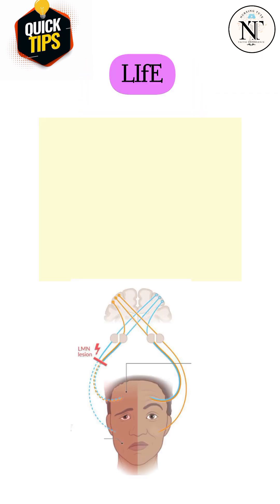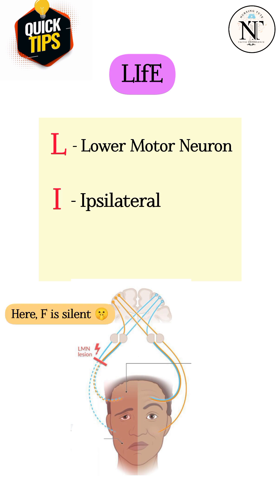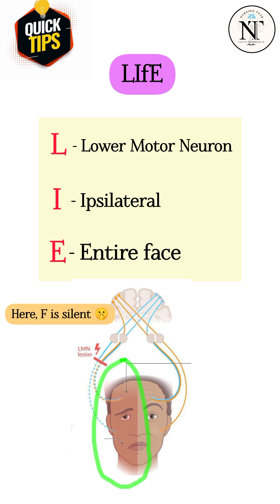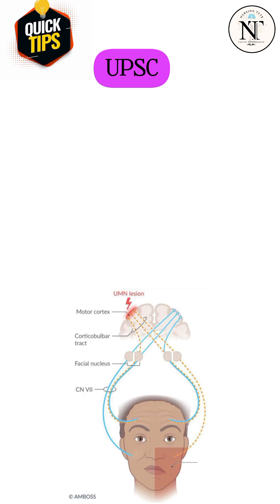In LIFE: L stands for lower motor neuron, I stands for ipsilateral meaning same side, F stands for face, and E stands for entire face is affected. In lower motor neuron lesion, the entire face is affected on the same side.